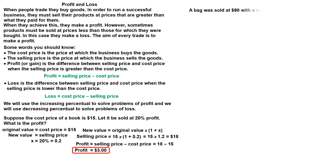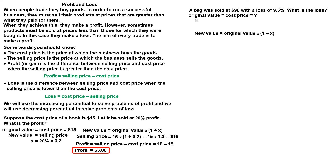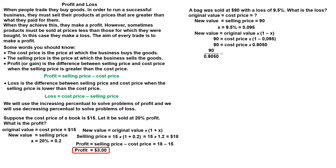A bag was sold at $9.80 with a loss of 9.5%. What is the loss? We use the percentage decrease because this is a loss problem. The original value is the cost price, which we don't know. The new value is the selling price, $90. The percentage decrease is 9.5%. Take the formula and perform the calculations. The cost price is $99.45. Loss is cost price minus selling price.